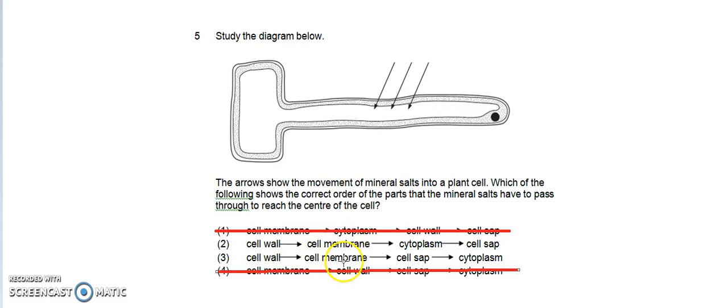The third one: after crossing the cell membrane, it will be in the cytoplasm. And so we can eliminate option three. From the cytoplasm, it will go to the center of the cell, which is the cell sap. So the answer is option two.